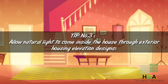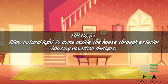Tip number three: allow natural light to come inside your building through the exterior elevation design, which will cut down maintenance costs in the long run. Plan the front elevation design in such a manner that it allows the entry of natural light inside your building. This can cut down energy costs by at least 30%, contributing to a greener environment.